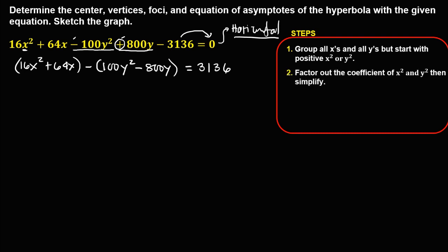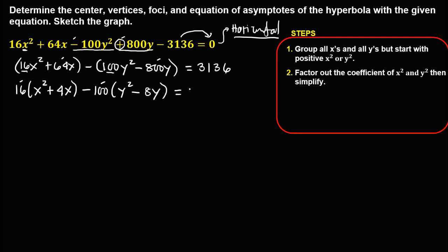Next, factor out the coefficient of x squared and y squared. For x, factor out 16: this gives x squared plus 4x. For y, factor out 100: this gives y squared minus 8y. So we have 16 times (x squared plus 4x) minus 100 times (y squared minus 8y) equals 3136.